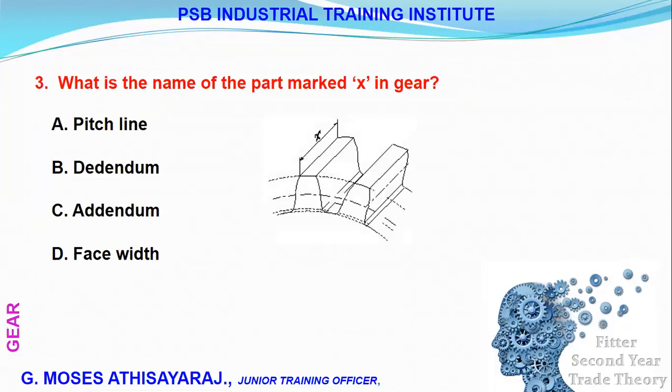The third question: what is the name of the part marked X in the gear? In the X mark, there are parts identified. The top surface is called the face. So the answer is the face.